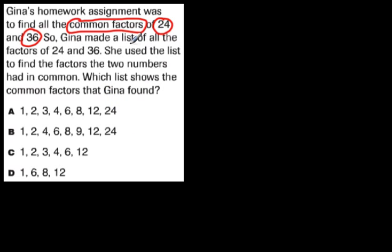So Gina made a list. Well, that's what we did. We made a list. And you can do that to solve this problem, too. She made a list of all the factors of 24 and 36. That's telling us that's what we need to do. We need to make a list of all the factors of 24 and 36. Let's see what Gina did next. She used the list to find the factors the two numbers had in common, which is what we did on the previous pages.